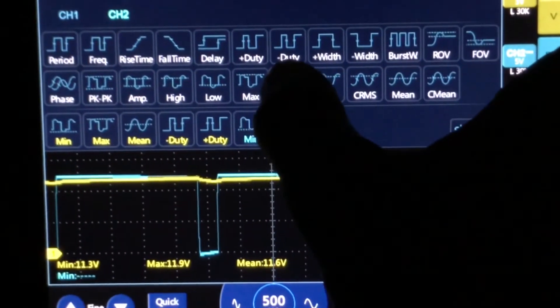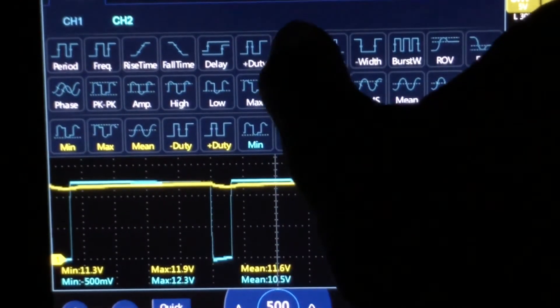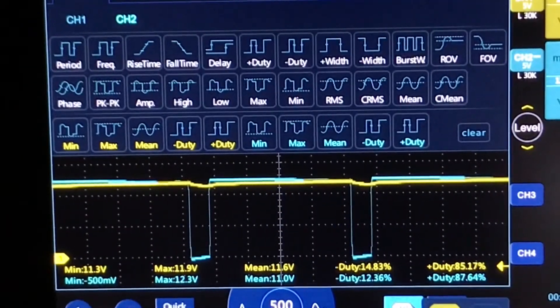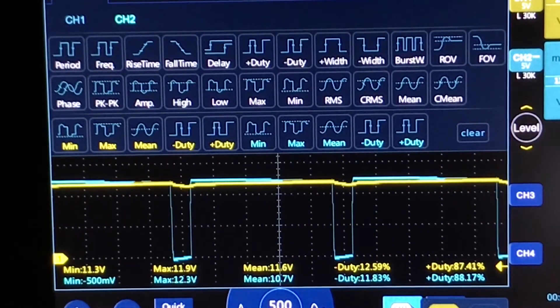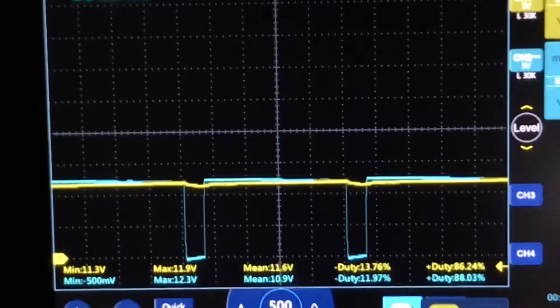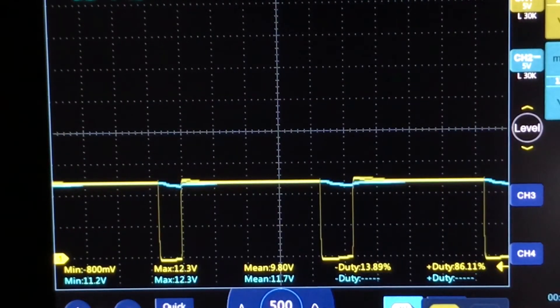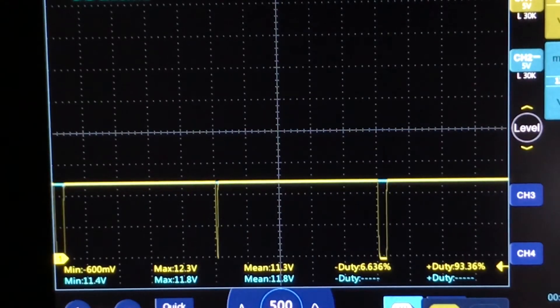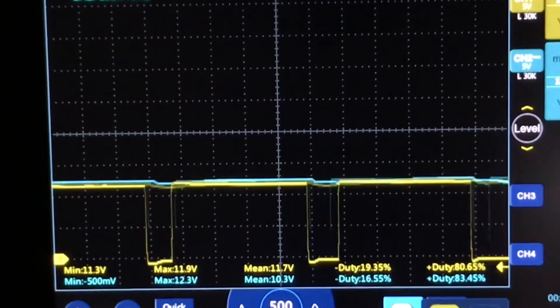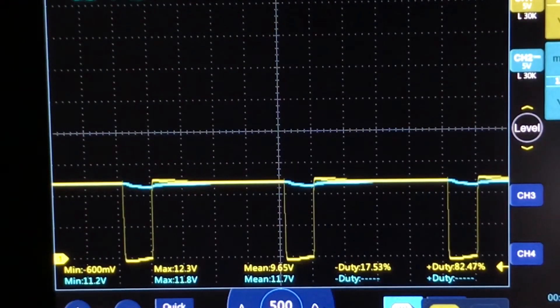Now we'll do the same thing on channel two. We'll go min-max, mean, duty negative and duty positive. There we go. All right, check it out. Now let's watch our duty cycle on both. Slowly to the ground, slowly let it off, and then a few quick throttle snaps. All the way to the floor and let off.